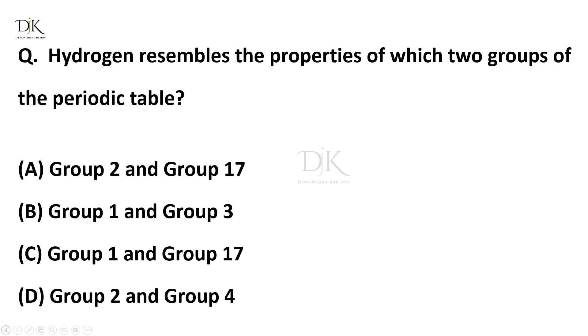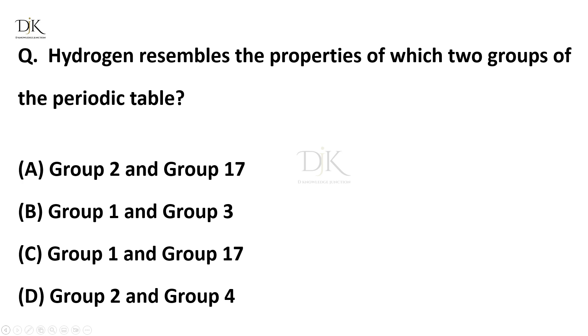Hydrogen resembles the properties of which two groups of the periodic table? Right answer is group 1 and group 17.